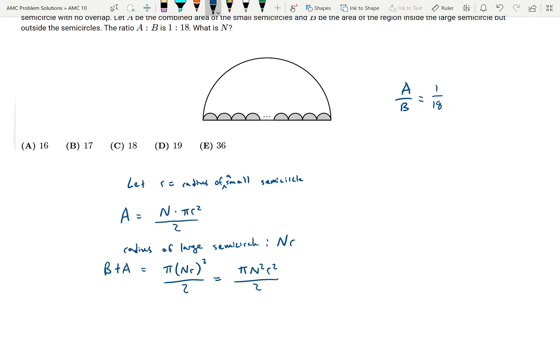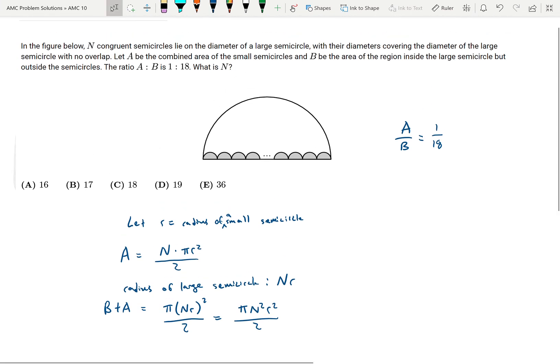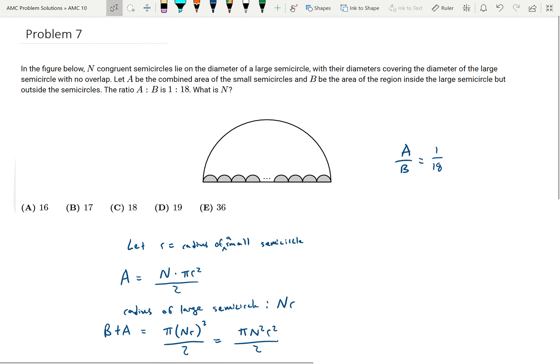Okay so now I want to look at that ratio up there again. One thing that you need to notice here is B is the area inside the large semicircle but outside the semicircles. We found B plus A so let's see if we can use that ratio to our advantage here.